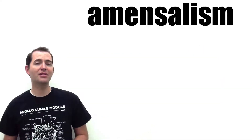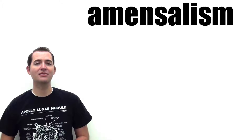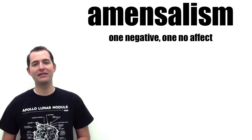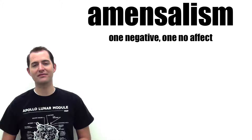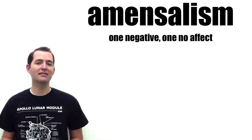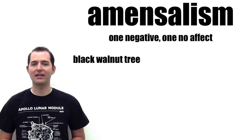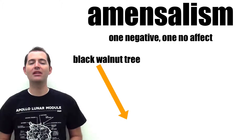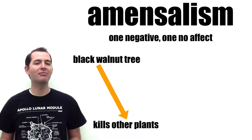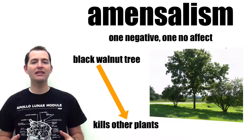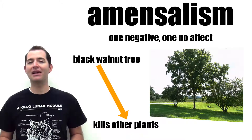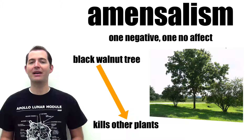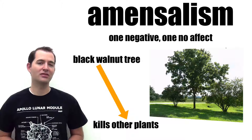Amensalism is a relationship between organisms where one negatively affects the other but is unaffected themselves. An example of amensalism relates to the black walnut tree. Black walnut trees excrete a chemical that kills all plants around their base or around their roots. This prevents any plants from growing beneath the walnut tree but has little to no impact on the walnut tree itself.